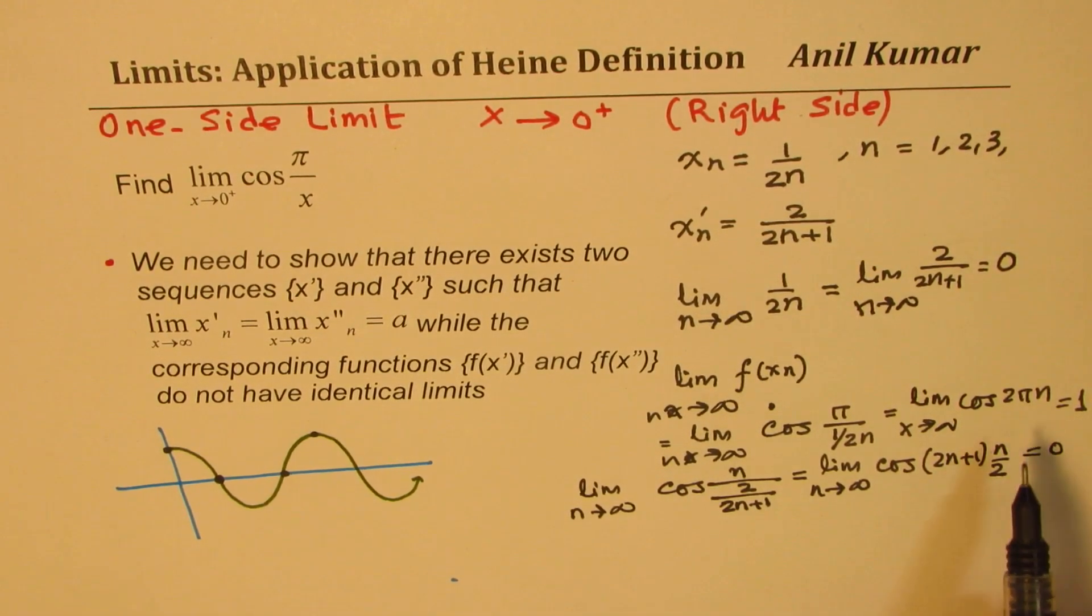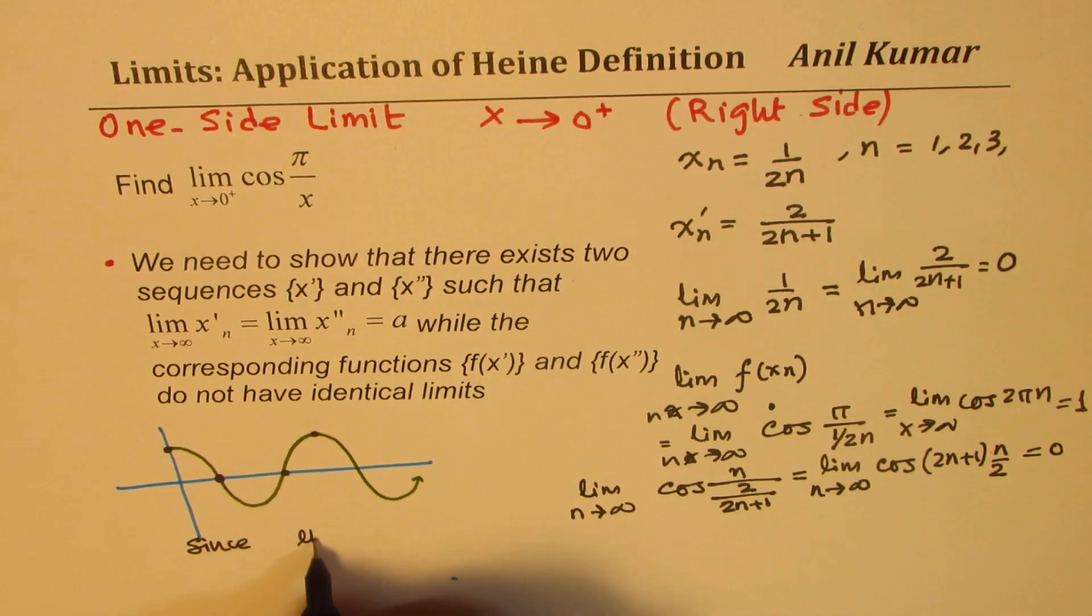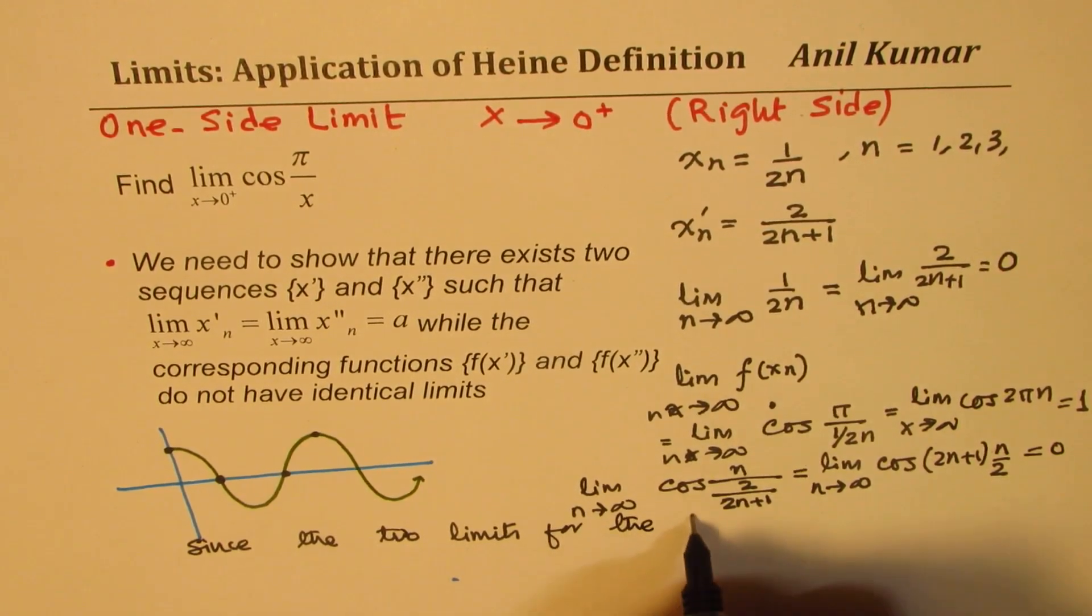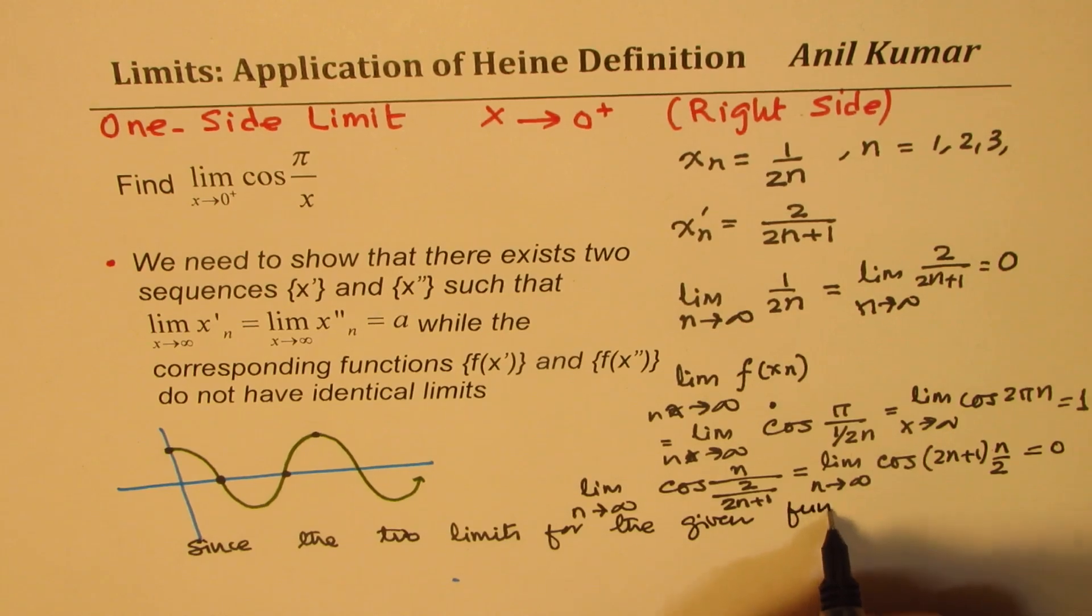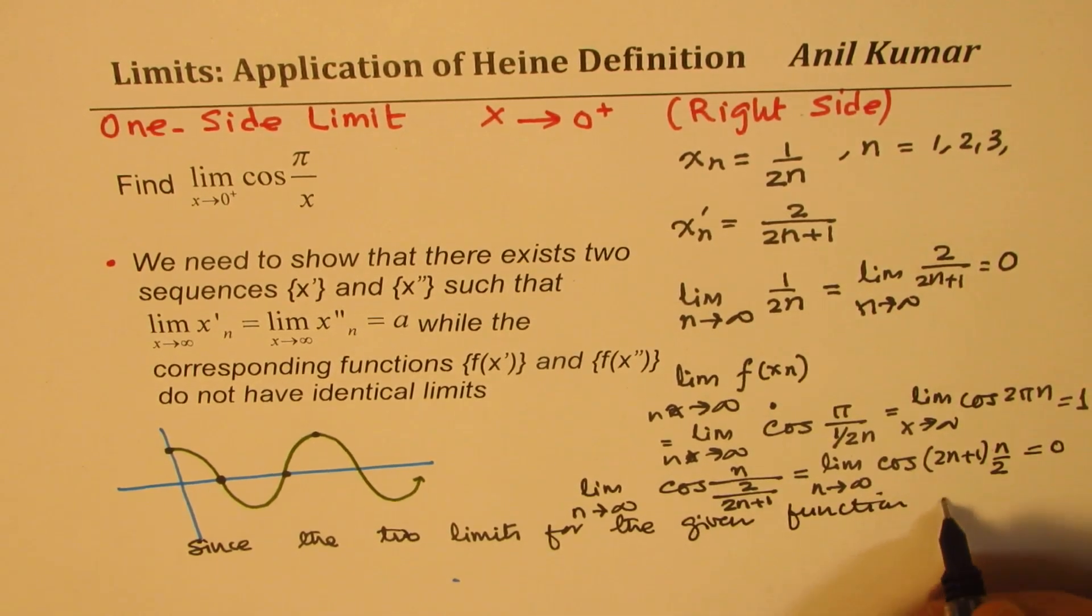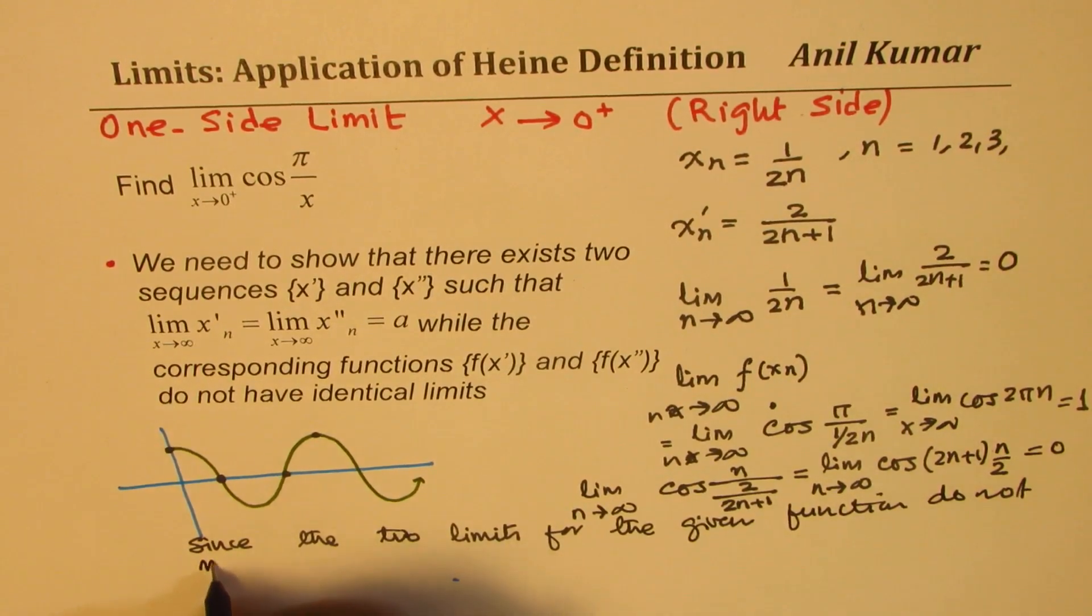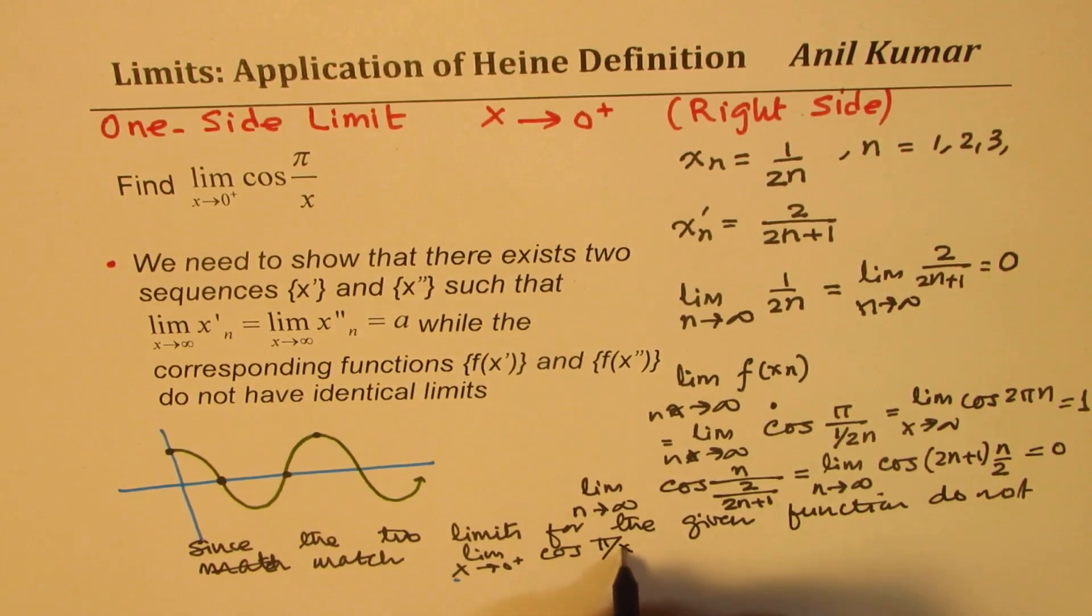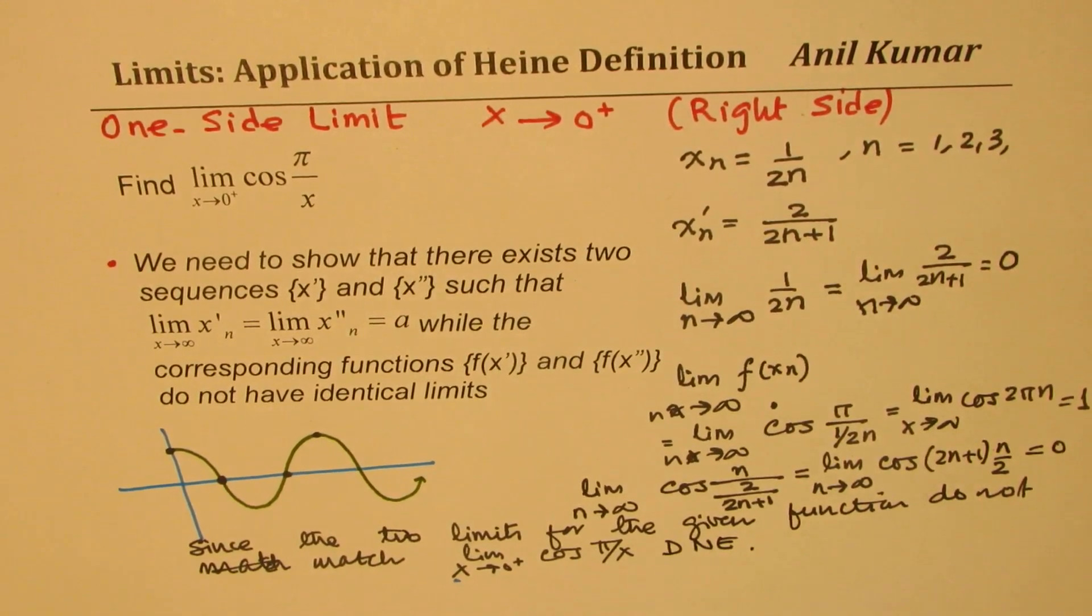So we see that these two limits are different. Since the two limits for the given function do not match, limit when x approaches 0 plus for cos of π by x does not exist. Does make sense to you. So that is how we are going to prove it.